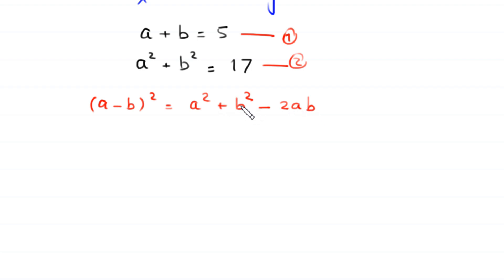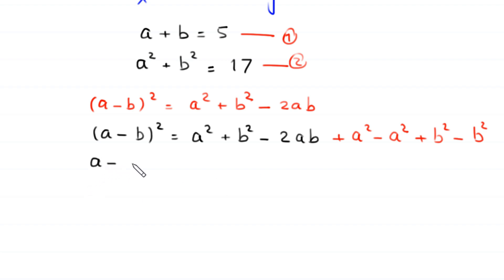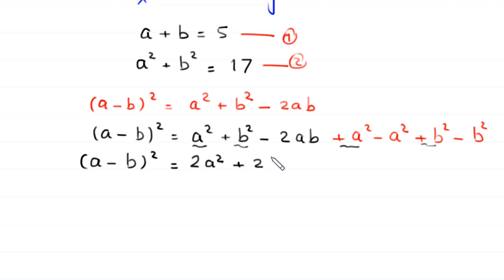On the right-hand side of this identity we add and subtract a squared and b squared. So a minus b whole squared equals a squared plus b squared minus 2ab, and adding and subtracting a squared and b squared gives us 2a squared plus 2b squared, then rearranging the remaining terms: negative a squared, negative b squared, and negative 2ab.